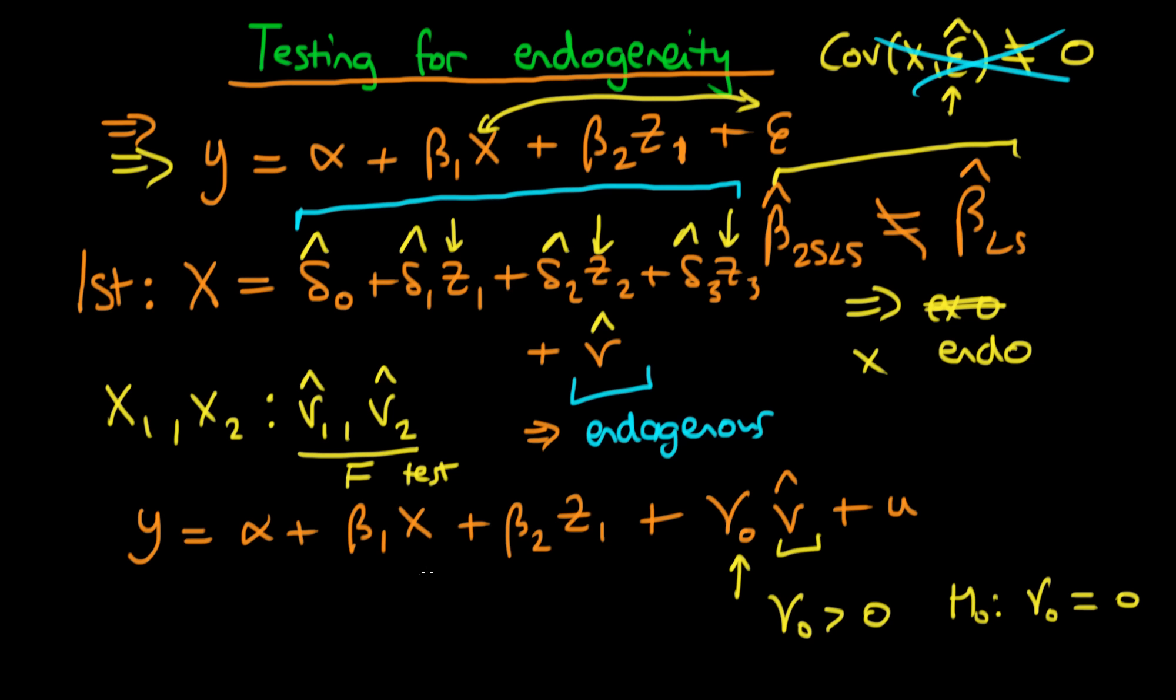And then we would include both of these estimates in our structural equation. And then what we could do then is, rather than doing a t-test, we could do an f-test for significance of both of these two variables, in which case we'd be testing for joint endogeneity of x1 and x2.